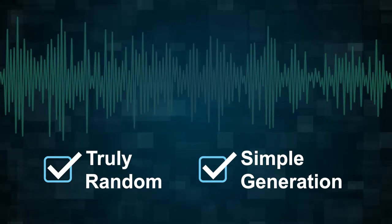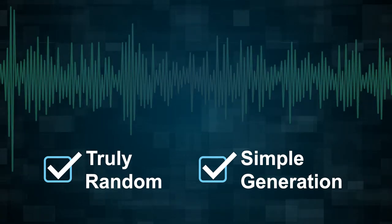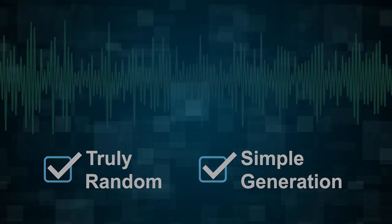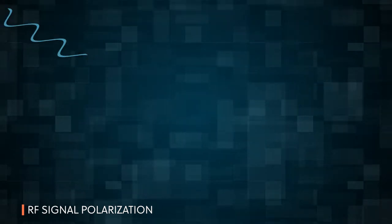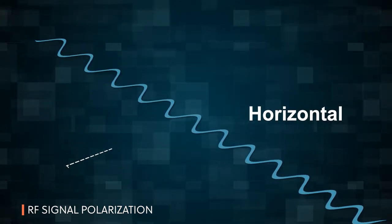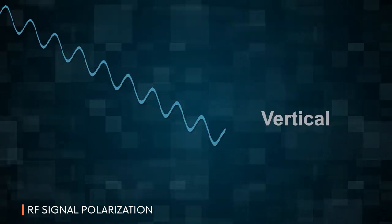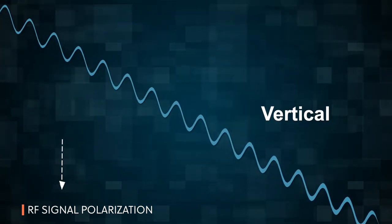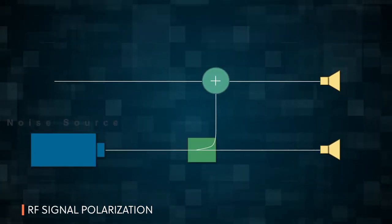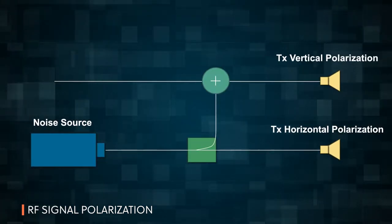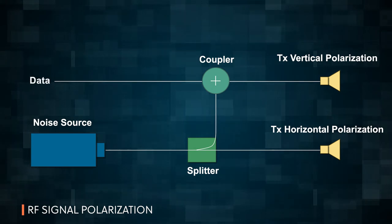Although noise-based encryption systems can use several techniques, one possibility is RF signal polarization. Using this method, transmissions will contain oppositely polarized RF signals. The noise waveform will be on one polarization, while the other will have that same noise waveform and the sensitive data.